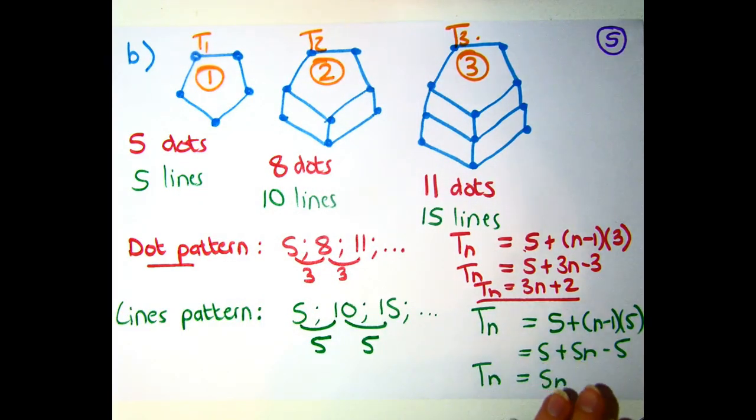And then I can find the general term, I can find what T50 is, and if they give me any value of a term, I can figure out where its position is in the sequence.